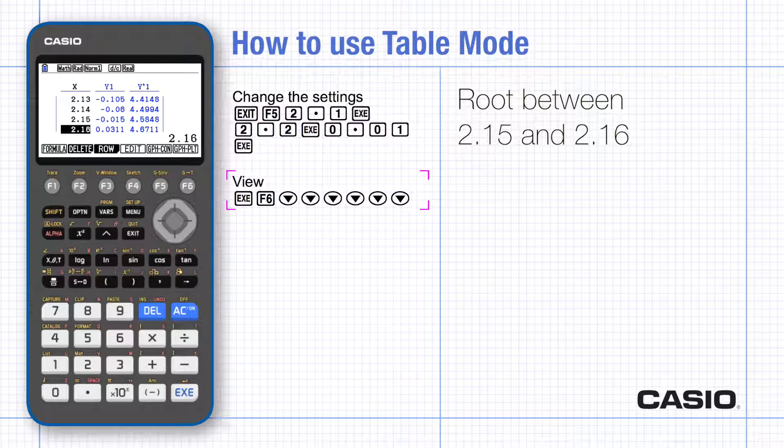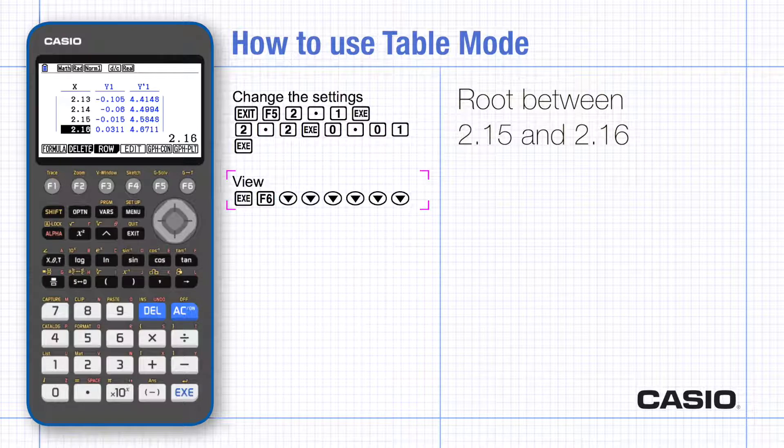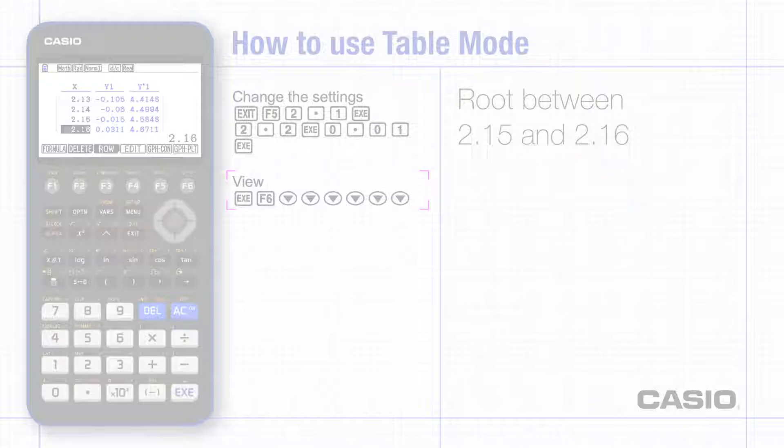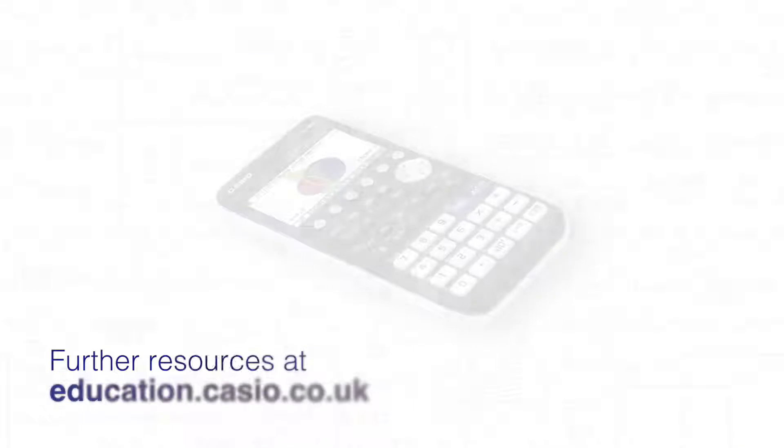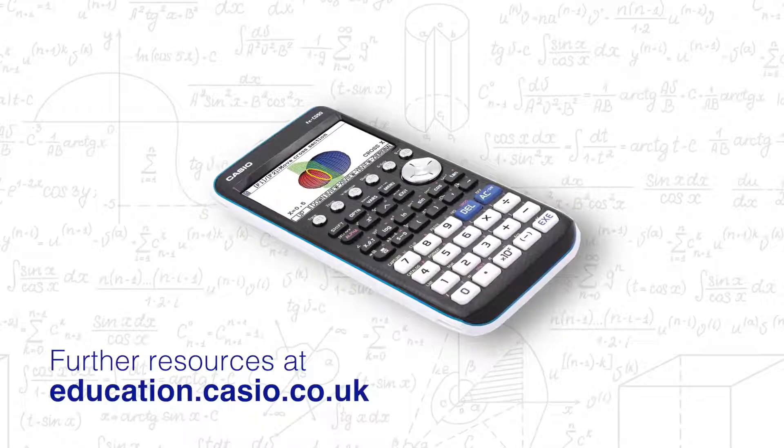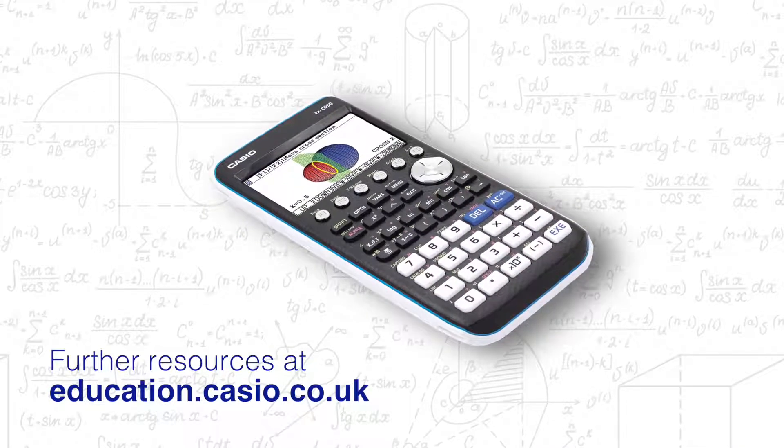This process can be repeated as many times as necessary to get the required degree of accuracy. It's always a good idea to find the root to one more decimal place than the question asks and then round it. You can find additional resources at education.casio.co.uk.